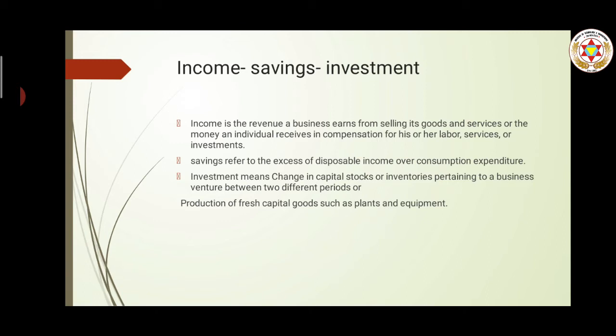Then comes savings. Savings refers to the excess of disposable income over consumption expenditure. It means savings is the amount of money left after consuming from the income. For example, if a person's income is $100 and they consume $50 per month, then $50 is left as savings for that month.